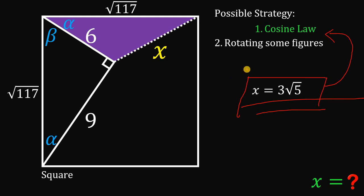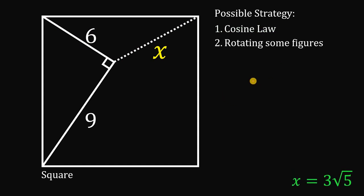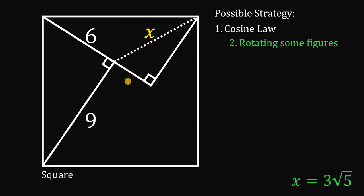Now let's begin the second solution — this is very simple and easy. The second method involves rotating some figures. The figure we rotate is the right triangle. After rotating, we can see that this segment equals 9 units, and another segment is 6, so the remaining segment must be 3. A total of 3 plus 6 gives us 9, which checks out.